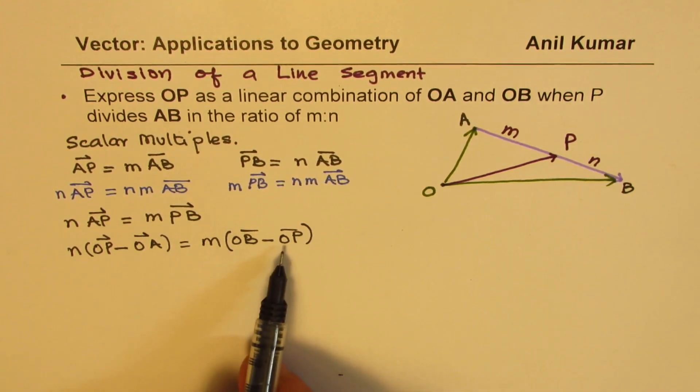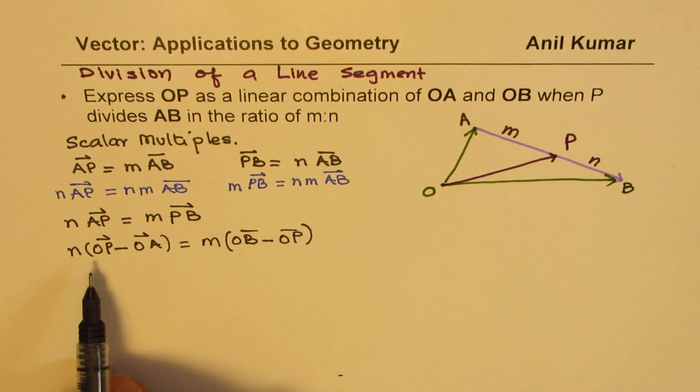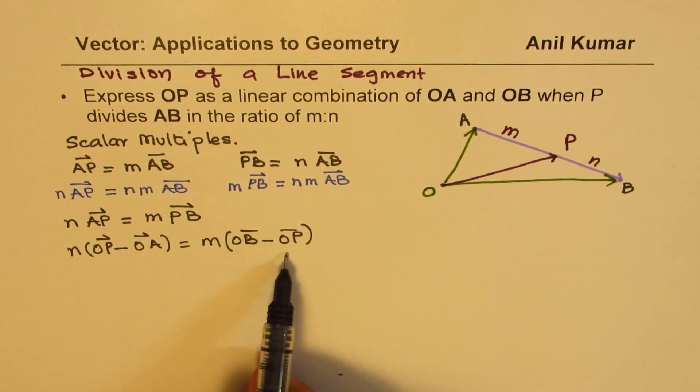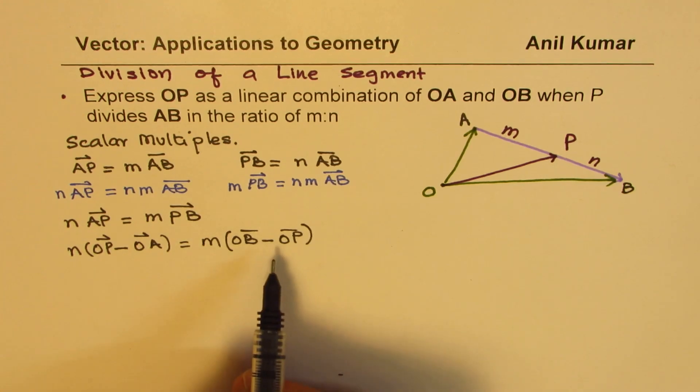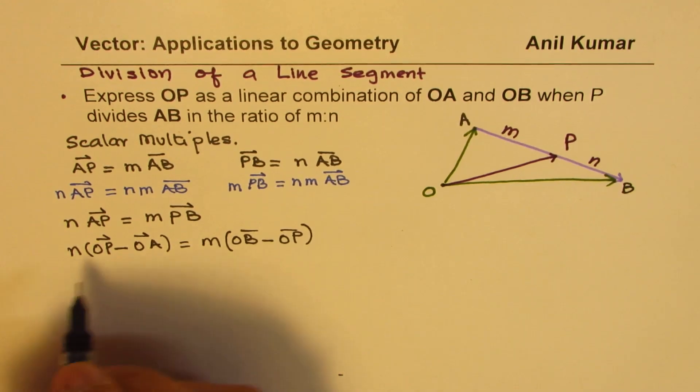We can bring OP to the left side to find an expression of OP in terms of OA and OB. As you can see, in this particular equation we only have OP in terms of OA and OB. Bringing it to the left side, we get N plus M, or let's do it in two steps. Let's open this.